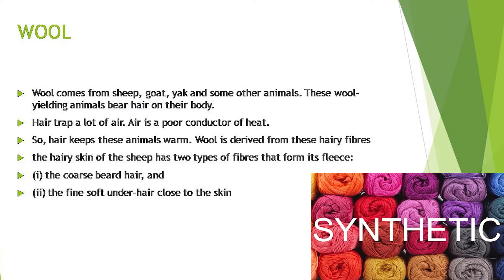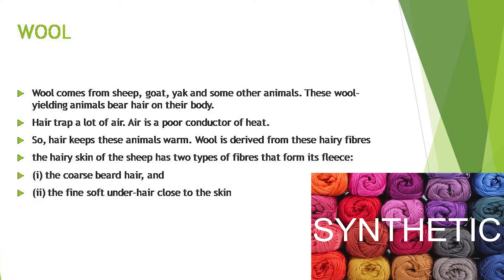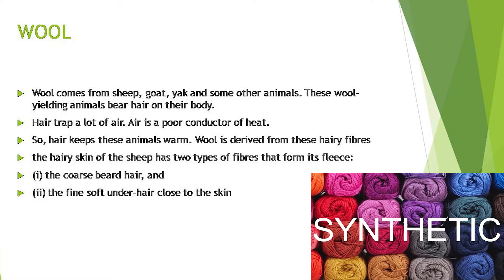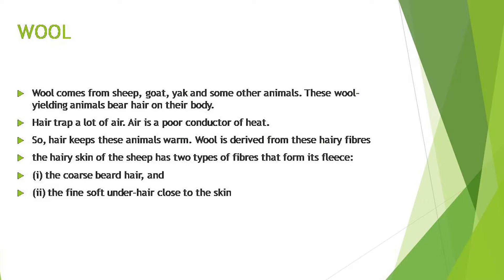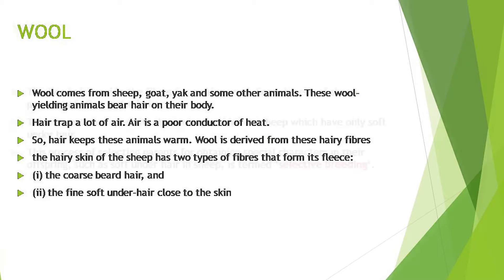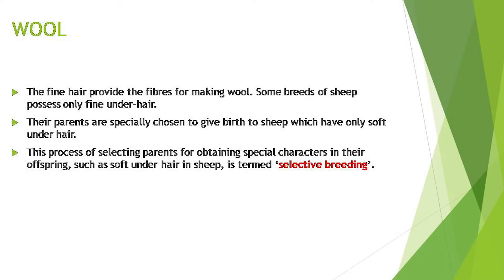The hairy skin of the sheep has two types of fibers: number one is the coarse beard hair, and second is the fine soft under-hair close to the skin. The fine hair provides the fiber for making wool. Some breeds of sheep possess only fine under-hair.